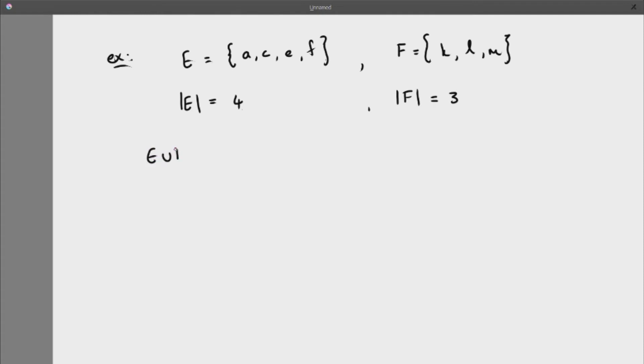E union F is a new set where I combine them the way the union wants me to, throw them all together. The number of elements in the union, well if I can see them all, it's as simple as counting them. That's seven.